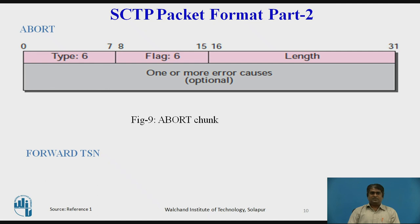This is a chunk recently added to the standard RFC 3758 to inform the receiver to adjust its cumulative TSN. It provides partial reliable service.